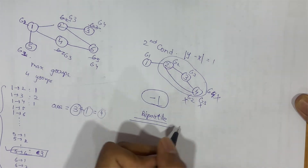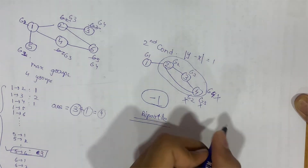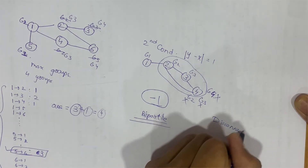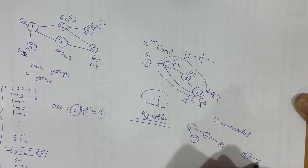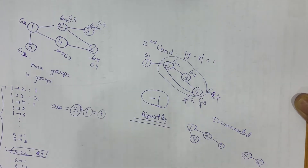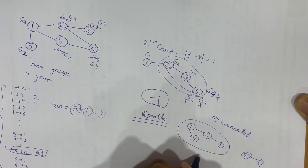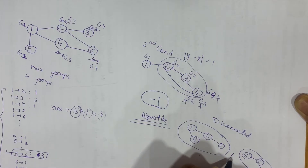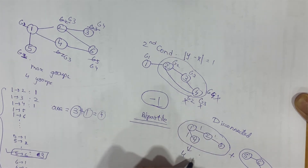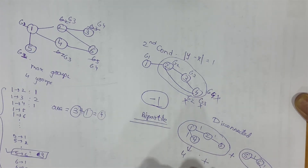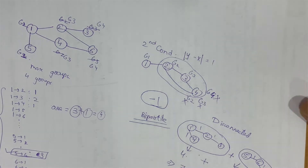Third, the graph can be disconnected. For each disconnected component, we find its answer independently and add them together. For example, if one component has a maximum distance of 3 giving 4 groups, and another has a maximum distance of 2 giving 3 groups, the total answer would be 7.